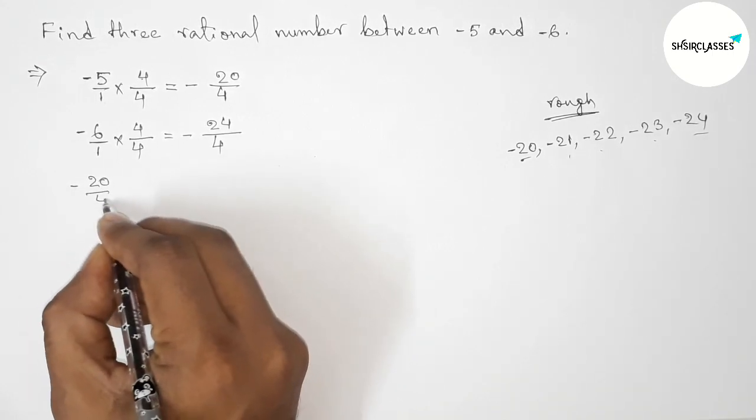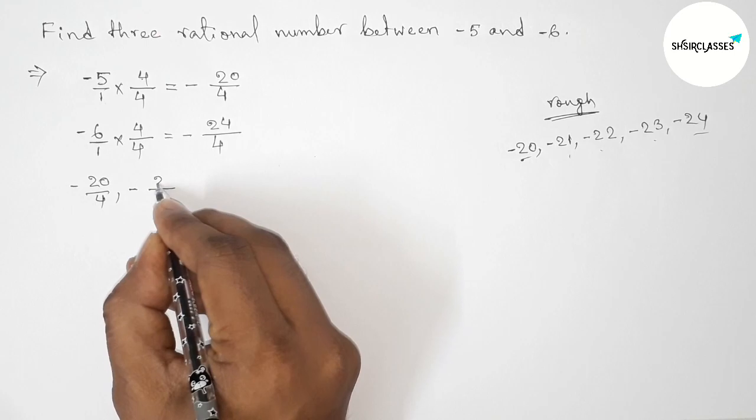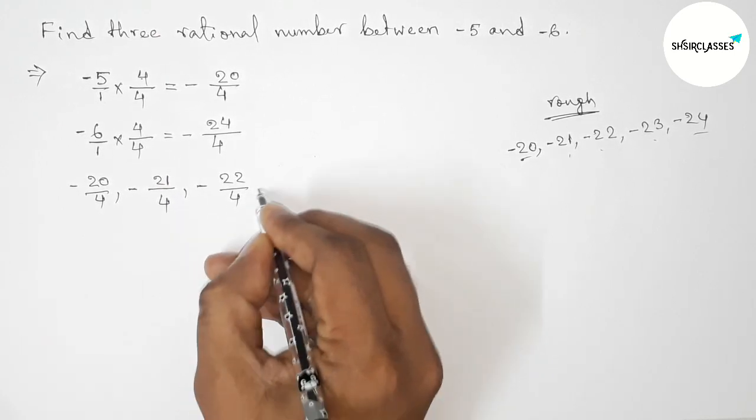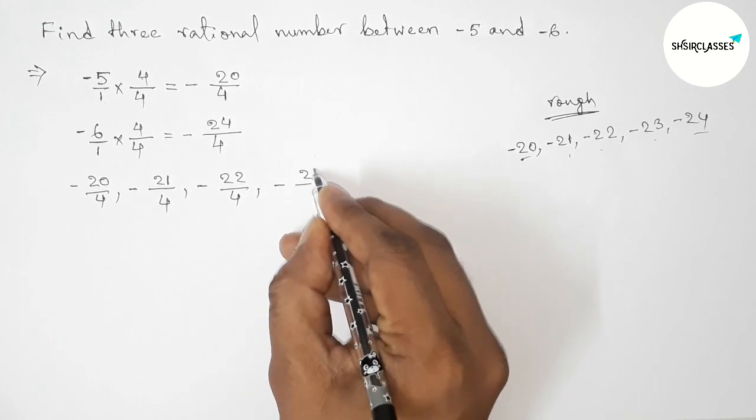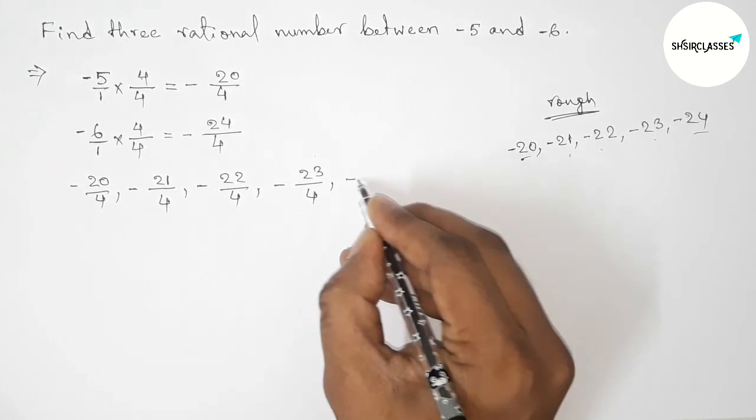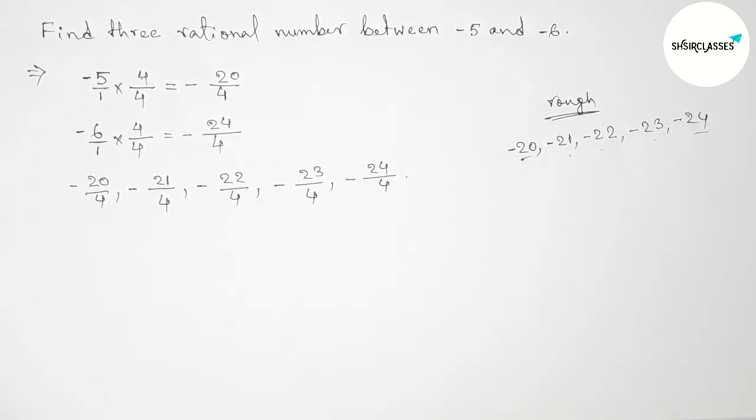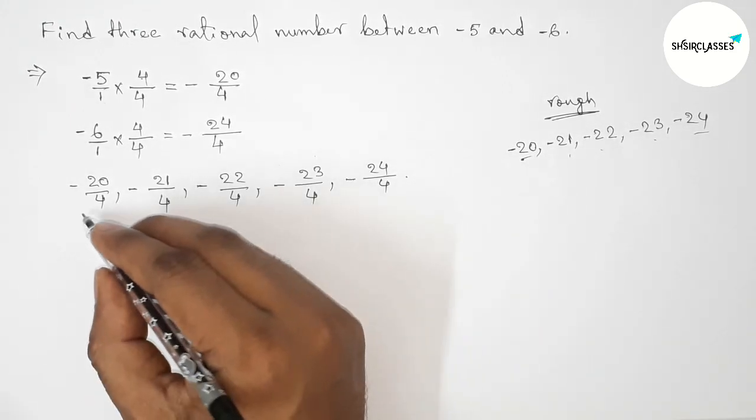Here first write down all the rational numbers. So minus 20 by 4, then minus 21 by 4, minus 22 by 4, minus 23 by 4, minus 24 by 4.